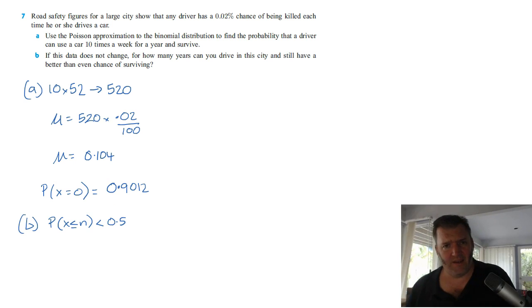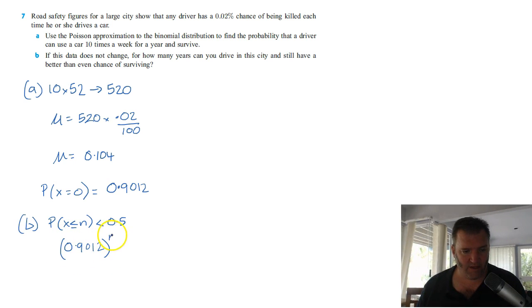So for this one here, to survive, we've just got to survive every year. So really, this one, we don't need any fancy rules or anything. We've got the probability of surviving one year, 0.9012. And if I raise that to the power of N years, that will give me the probability overall. Here I'm going to have, it's got to be less than 0.5. What's the value of N that makes that happen?